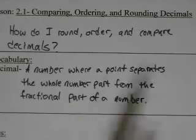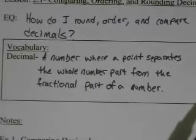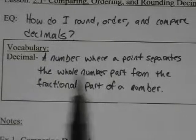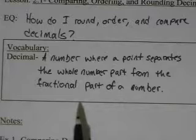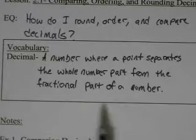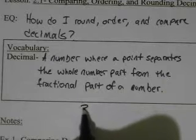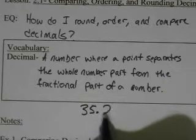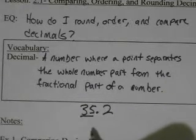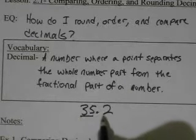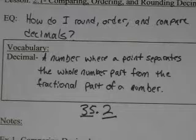Well first, what is a decimal? So we have a vocab word here. A decimal is a number where a point separates the whole number part from the fractional part of a number. For example, if we have 35.2, the 35 is the whole number. The decimal separates the whole number from the fractional part of the number.